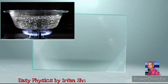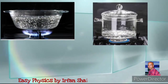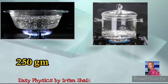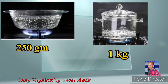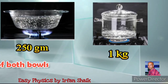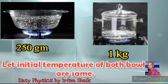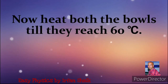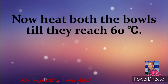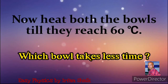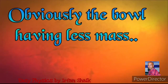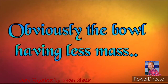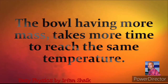Let us take water in 2 different bowls. The first bowl contains 250 grams of water and the second one contains 1 kg of water. Let the initial temperatures of both bowls be the same. Now heat both the bowls until they reach 60 degrees centigrade. Which bowl takes less time? Obviously the bowl having less mass. The bowl having more mass takes more time to reach the same temperature.